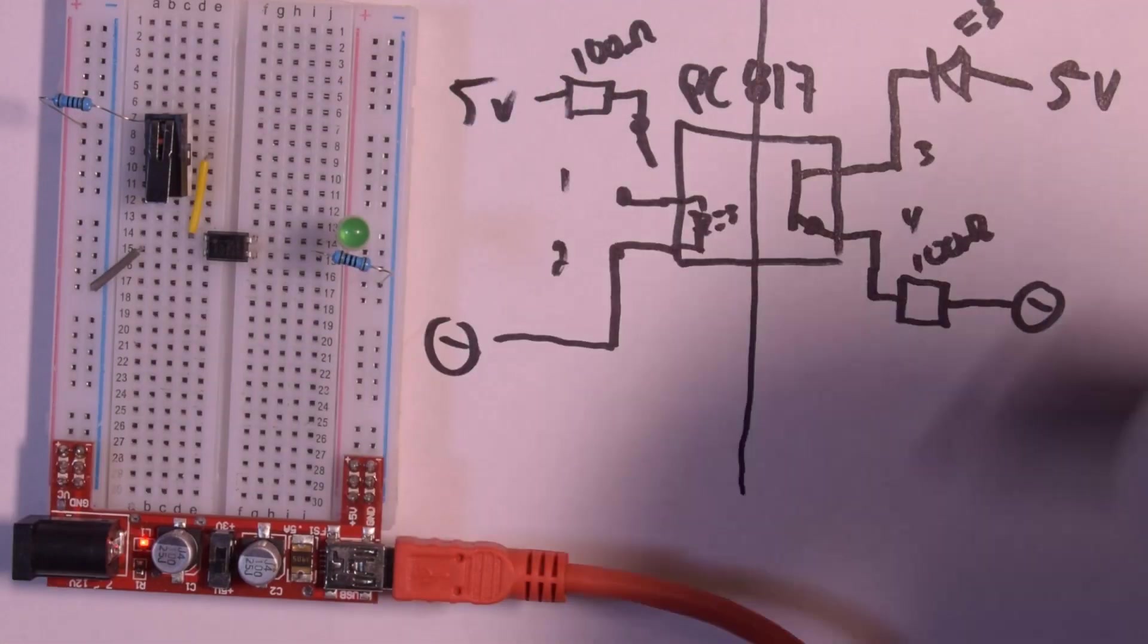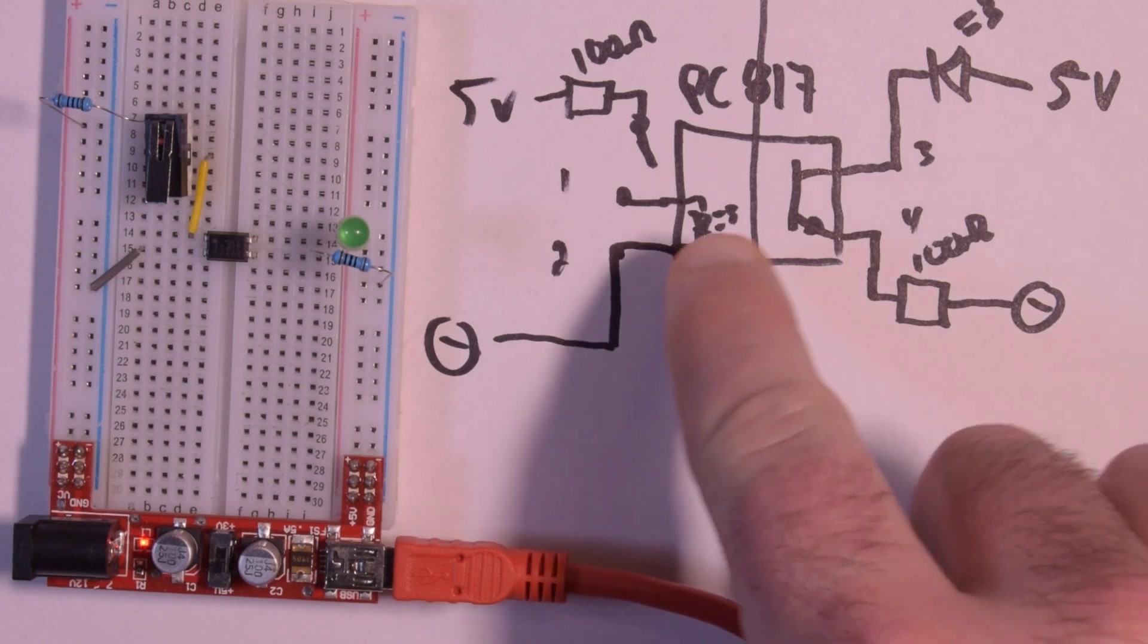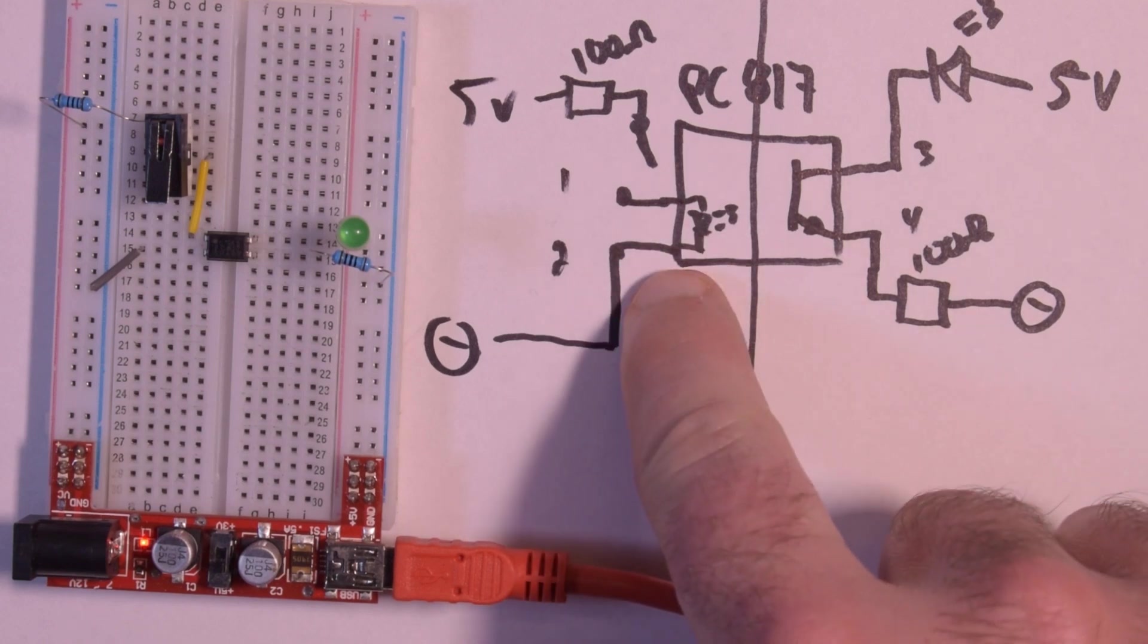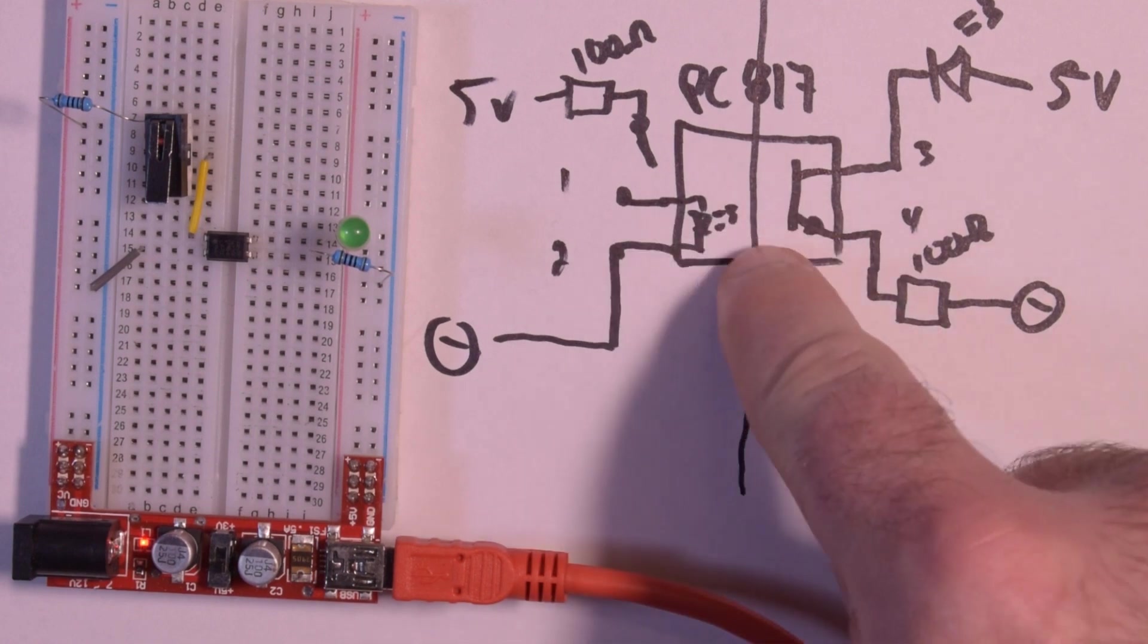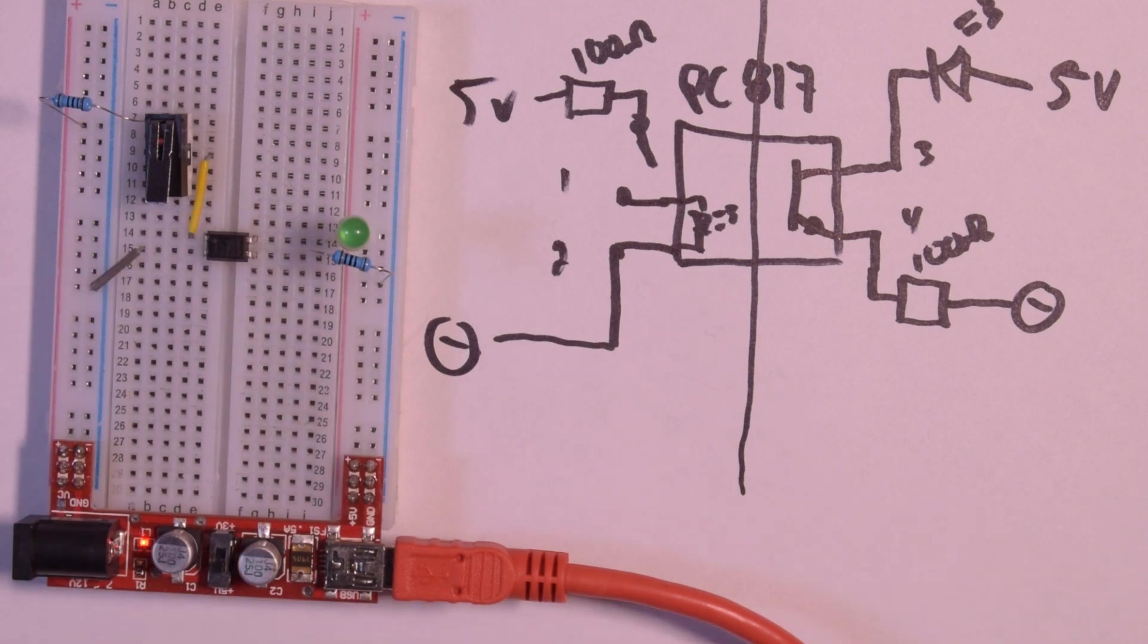So that is how an opto isolator works. The opto comes from optical because it's actually light going from one side to the other. So that's pretty cool. You're just going to have to trust me that there's an LED in here, because it's not like I can cut it open and show you. Wait a minute, yes I can.